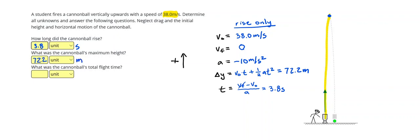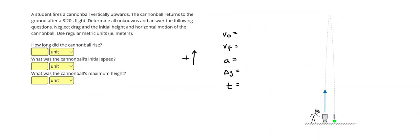The last thing I need to do is to find the cannonball's total flight time. Well, if the cannonball rises for 3.8 seconds, it's going to fall for an additional 3.8 seconds. So I can just do 3.8 times 2, and that gives me 7.6 seconds for the cannonball's total flight time. Let's go ahead and take a look at another problem.